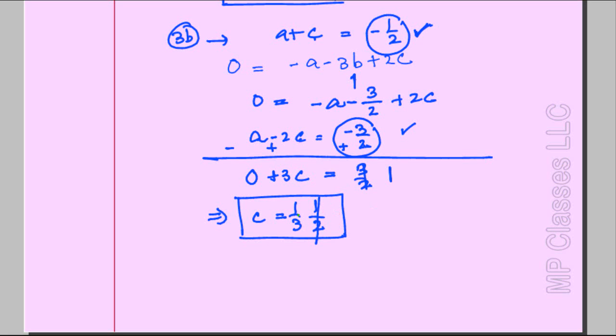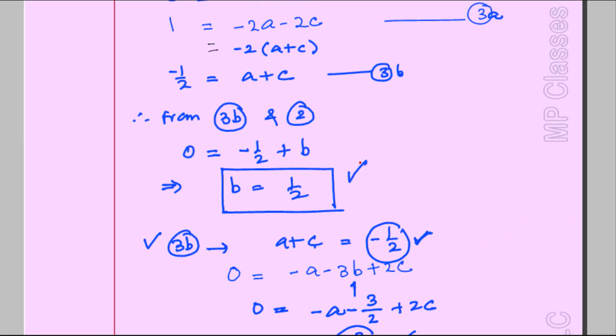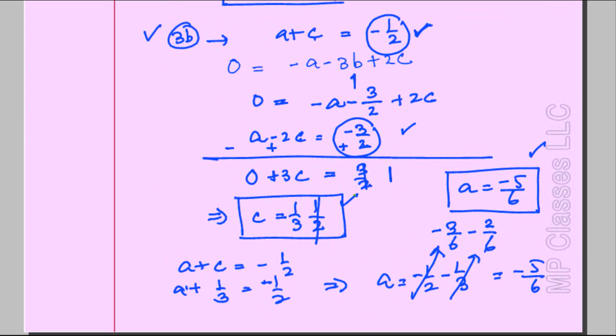Now you can substitute C as minus 1/3 in 3B which is A plus C equals minus 1/2. Substituting C as minus 1/3, so you have A plus minus 1/3 equals minus 1/2. This implies that A is minus 1/2 plus 1/3. This can be converted to minus 3/6, this is 2/6, so you get minus 1/6. Wait, let me recalculate. Actually A is minus 5/6. So we needed 3 values: A is this, B is this, and C is this.